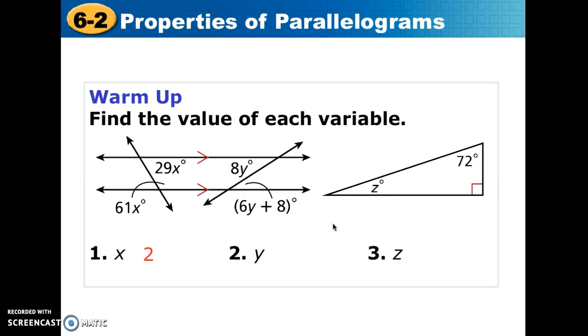For variable y, we have to notice that these are alternate interior angles, so they are going to be congruent. We set them equal to each other, solve for y, and we get y is equal to 4. In question number three, we see that we have a right triangle, which means we already know 90 degrees of the 180 degrees has been taken up. So the other two angles, the acute angles in the right triangle are complementary, meaning they add up to 90 degrees, so we do 90 minus 72, giving us 18.